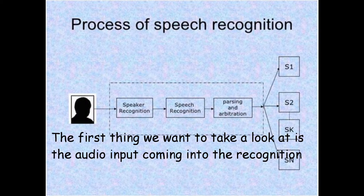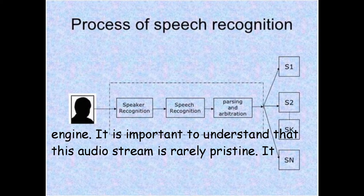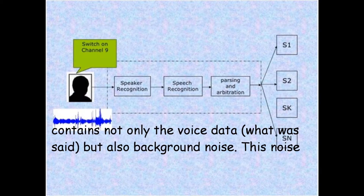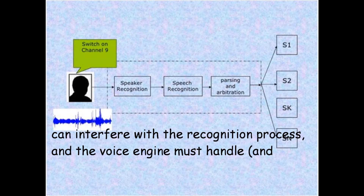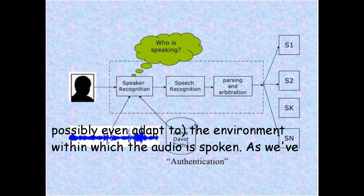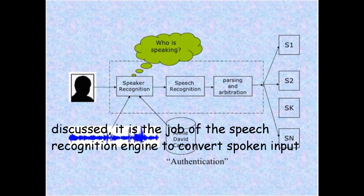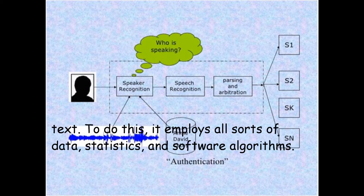The first thing to look at is the audio input coming into the recognition engine. It is important to understand that this audio stream is rarely pristine. It contains not only the voice data — what was said — but also background noise. This noise can interfere with the recognition process, and the voice engine must handle and possibly even adapt to the environment within which the audio is spoken. It is the job of the voice recognition engine to convert spoken input into text, employing data, statistics, and software algorithms.